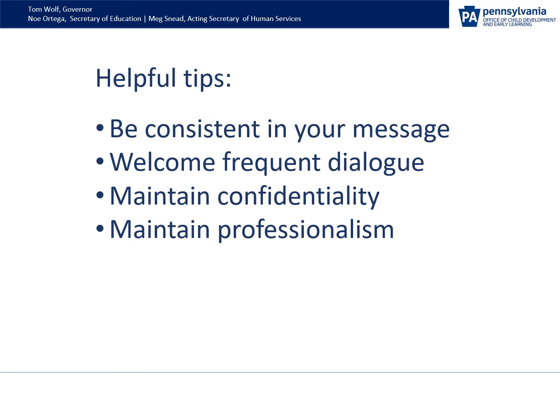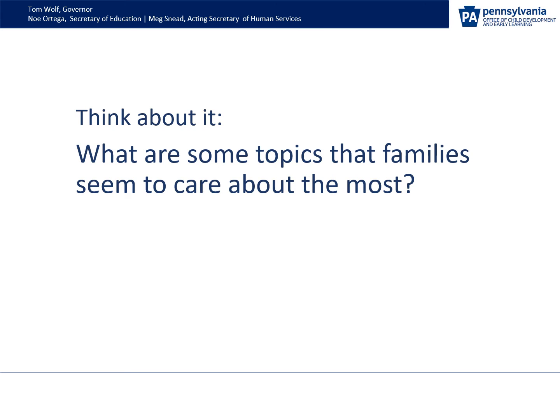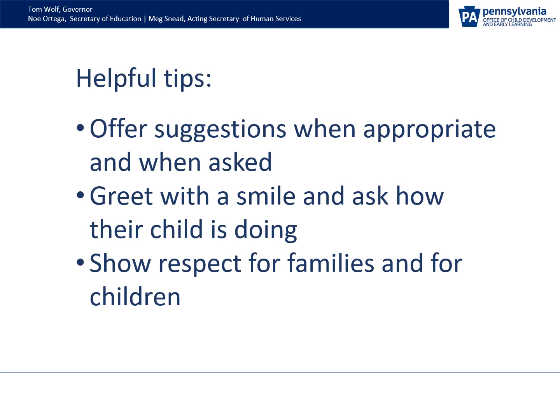What are some topics that families care about the most? The most important topic is their own child — how was their child's day, what did they eat, how did they nap, how did toilet training go? They also care about their child's development, interactions, and what's going on in the classroom that pertains to their child. When talking with family members, focus on the topics they care about the most.